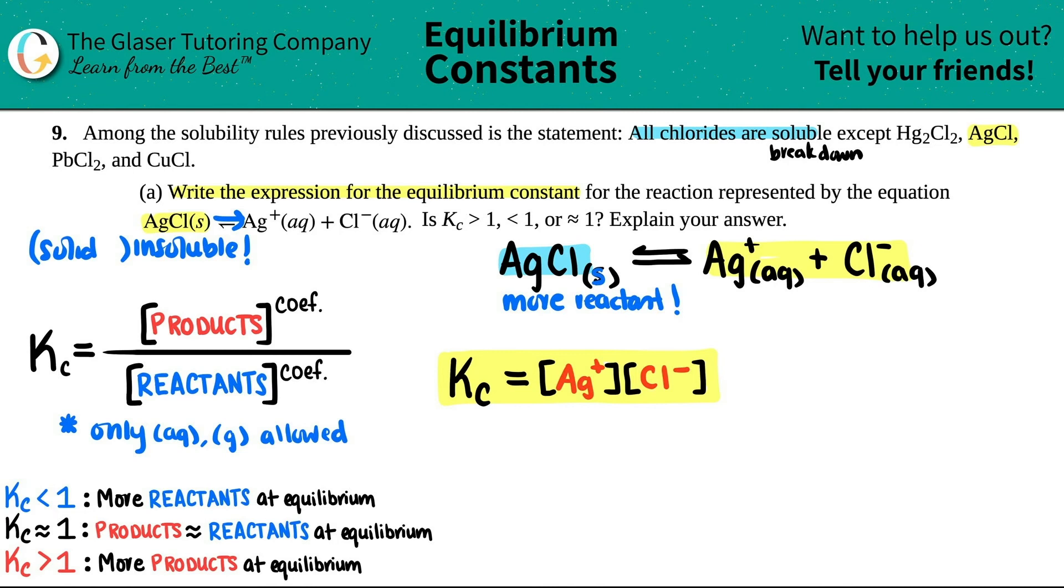And because of that, then I have to realize, okay, more reactants at equilibrium means that my Kc is always going to be less than one. So this equilibrium constant, this Kc value would be less than one. And then explain your answer. Basically just what I said, but just write it down. That if you have a solid, you're not really going to try to break that up. Insoluble guys remain solids for the most part. So you will not go to your products, meaning that you're going to have more reactants than your products, way more than this. And that's why we came to this.